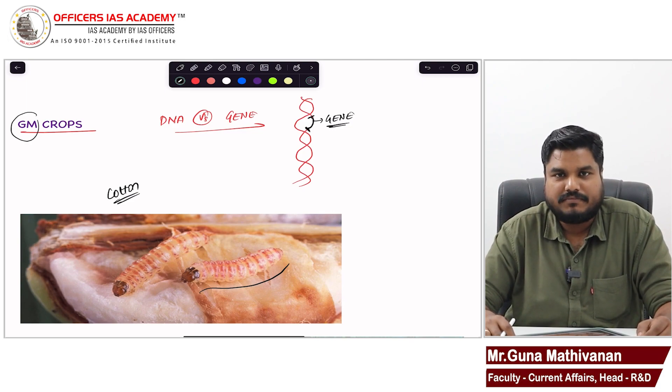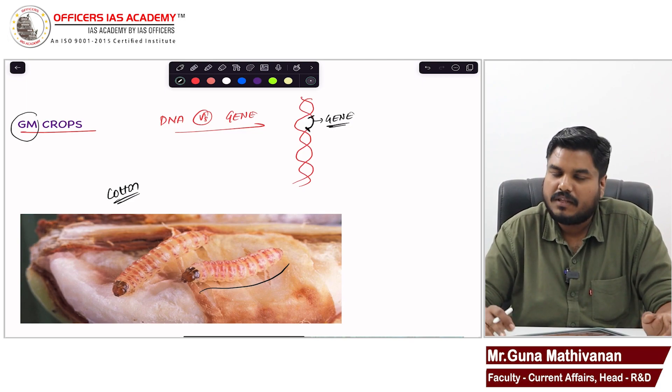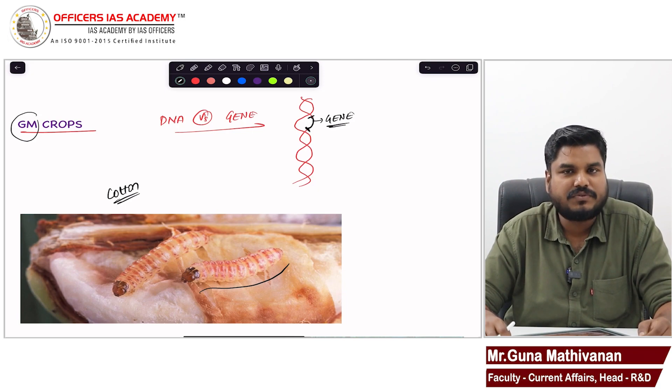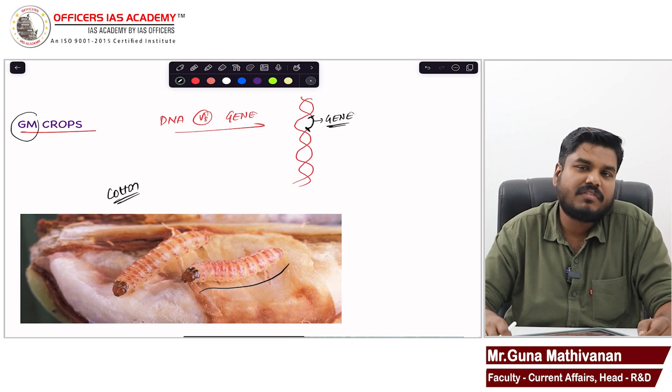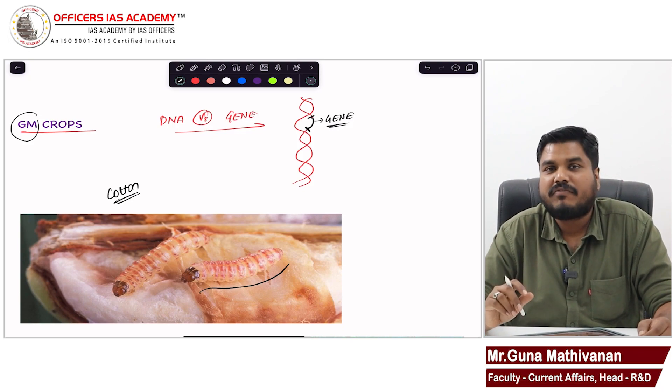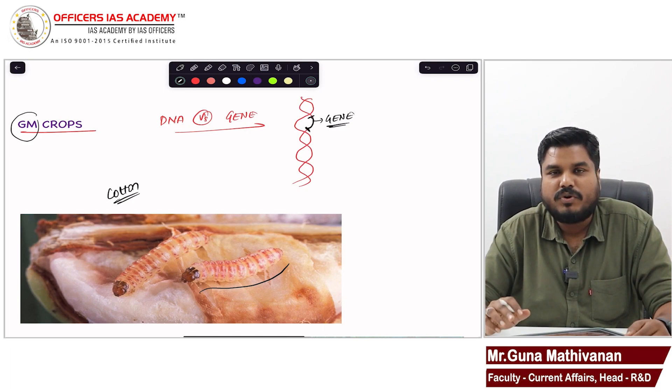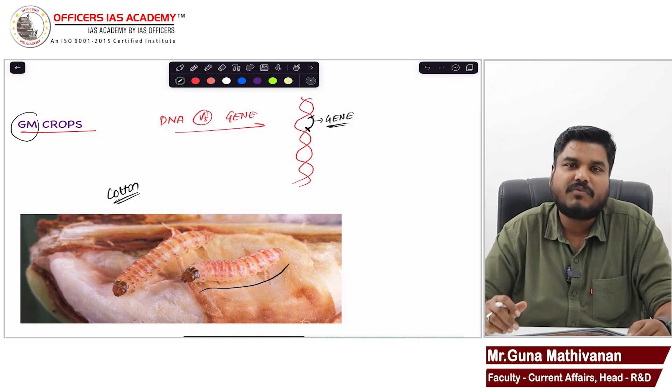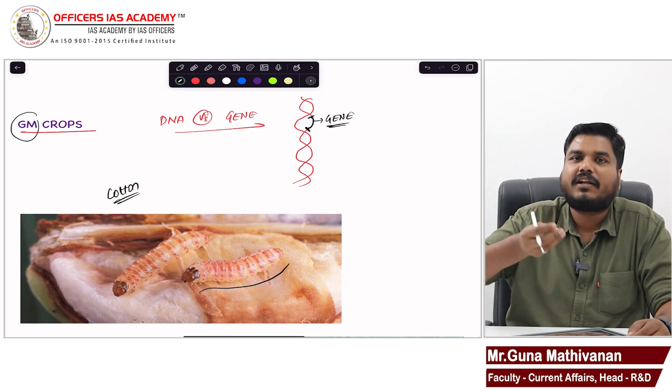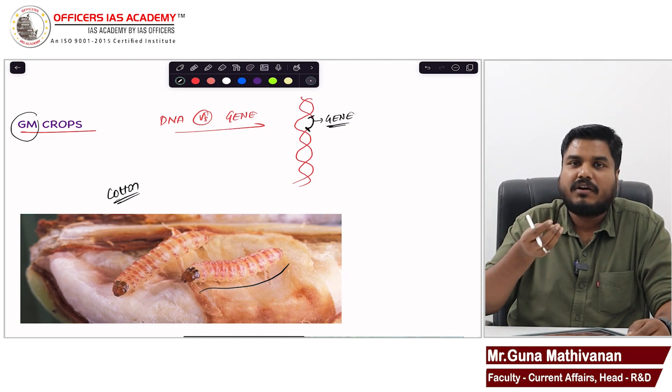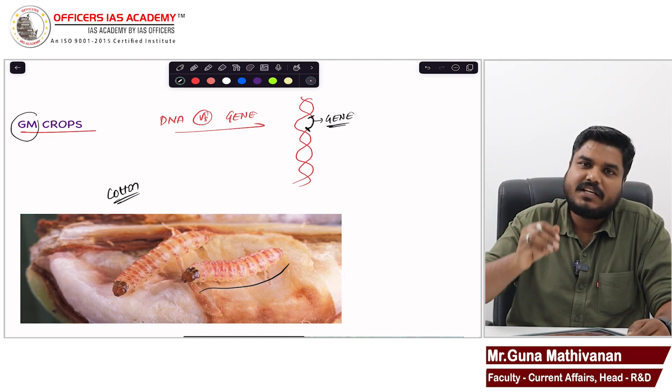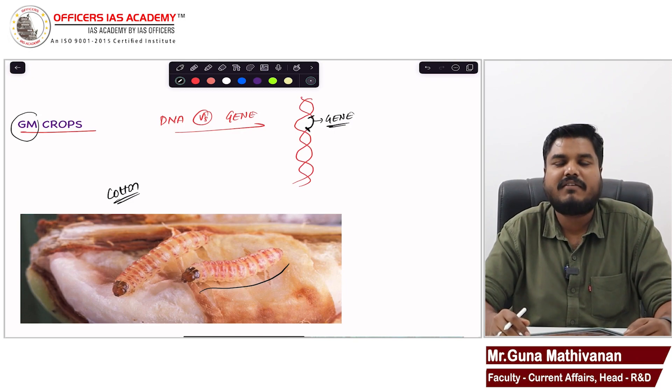So to overcome this problem globally, a lot of research was going on. However, an American company came with genetically modified cotton to prevent the cotton from these pink bollworm attacks. That American company, Monsanto, they came with this genetic modification. They created a new cotton variety in which they modified the genes of the cotton.